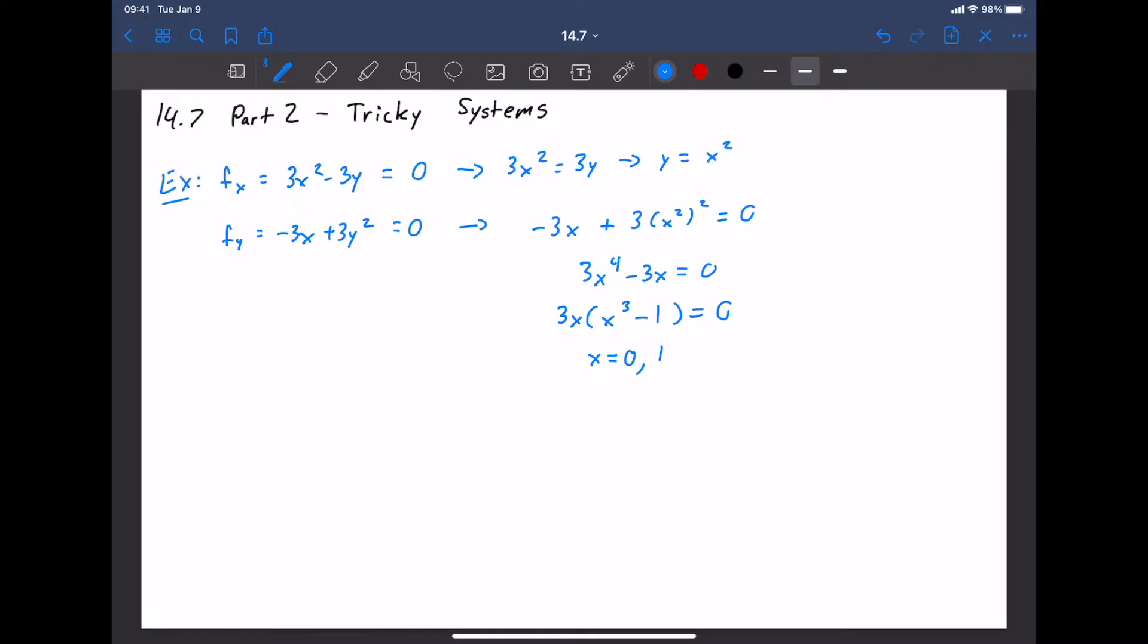I'm going to combine this with the equation down here and get negative 3x plus 3 times x squared squared, and you have to be very careful when you do that. Simplifying this would show that 3x to the fourth minus 3x equals zero. You should factor out a GCF. Do not divide by x. That will exclude solutions. And when I factor out the GCF here of 3x, you can find that there are two solutions: x equals zero and x equals one.